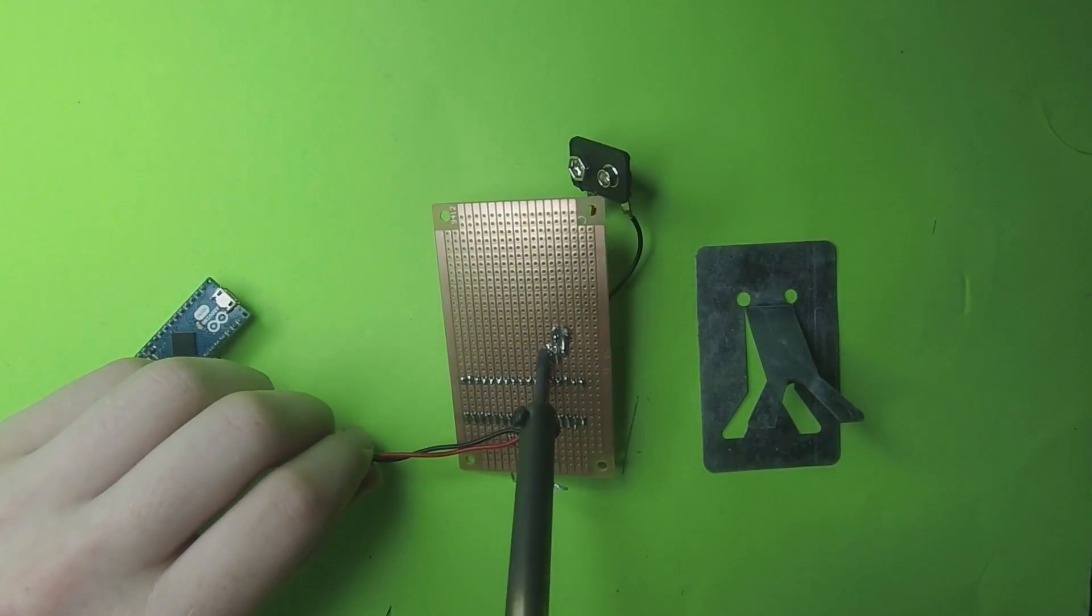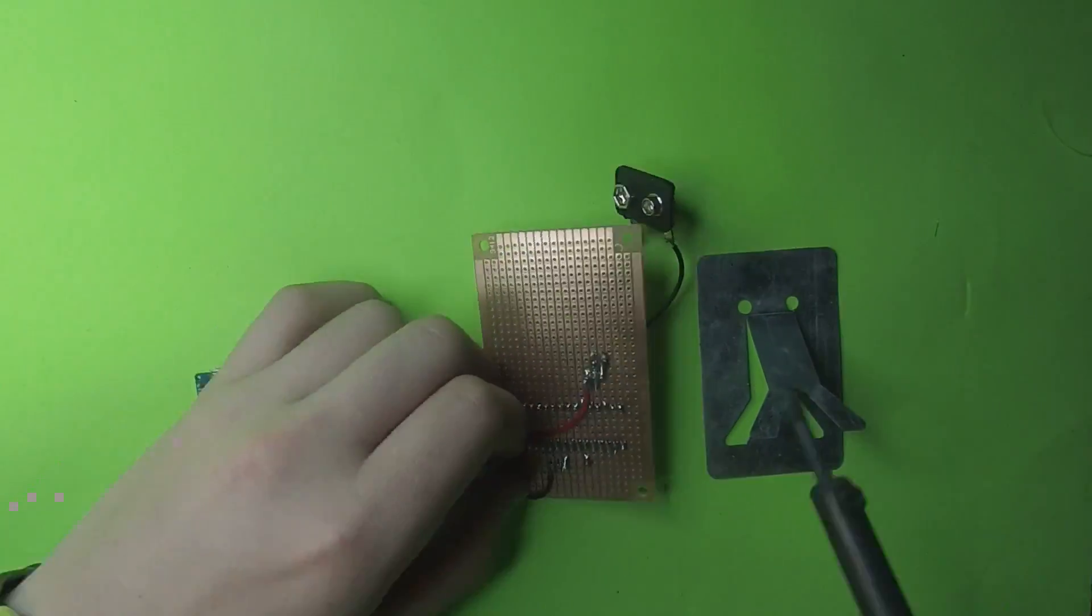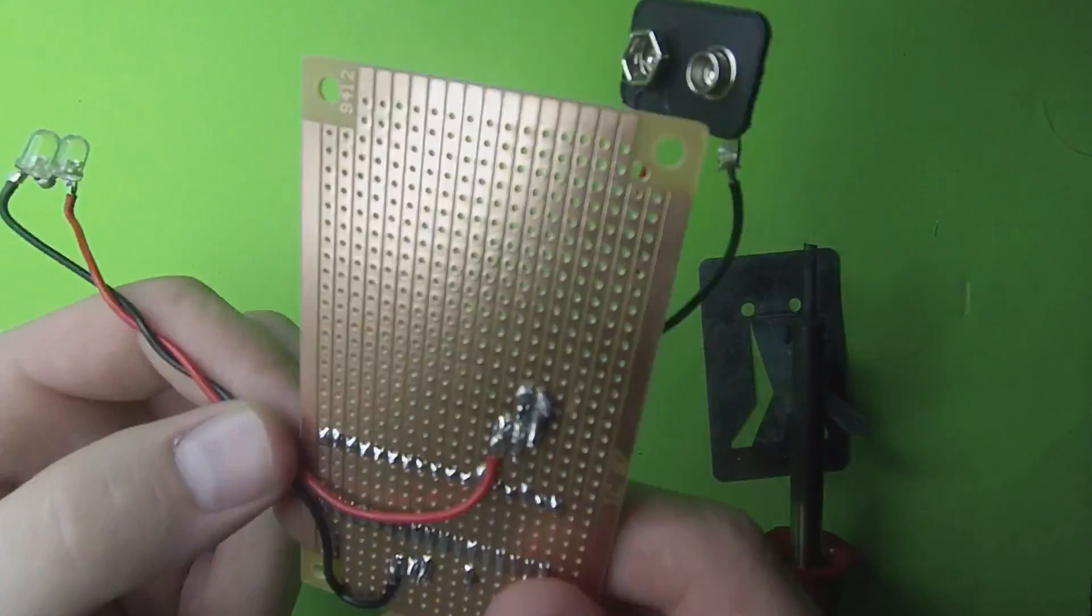And then I soldered my LED wire, the positive wire, to 9 volts, and then the other one to ground.